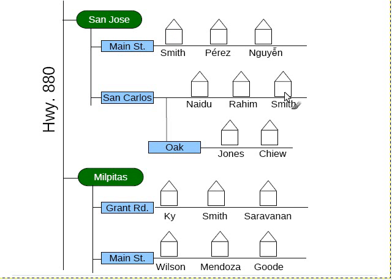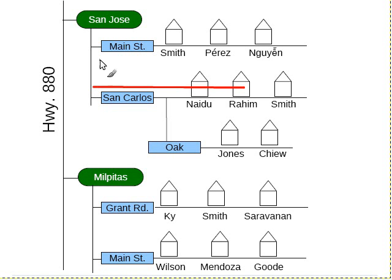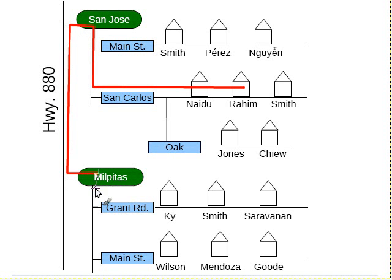Let's say we want to go from the Raheem house to the Key house. Again, this is all on our website, so we can do it with a relative path. We'll start at the Raheem house, and then we'll go back to San Carlos Street, where it connects to the main road in San Jose. And now that we're in San Jose, we can go back to Highway 880, take it down to Milpitas, and to Grant Road, and there's the first house, the Key House.